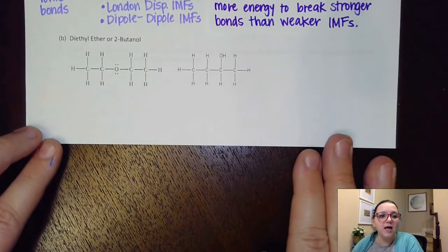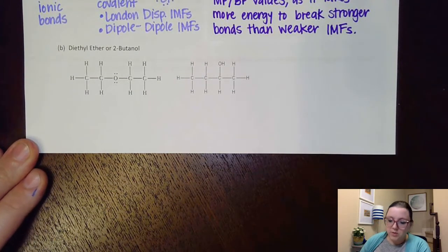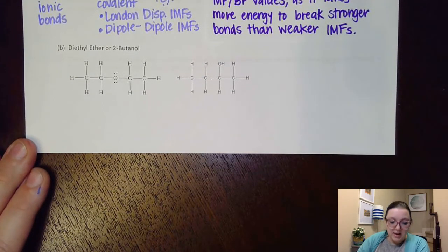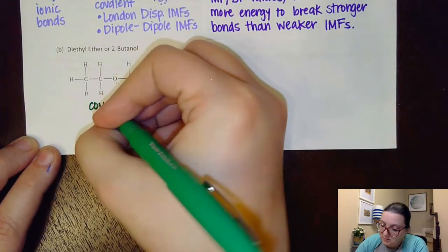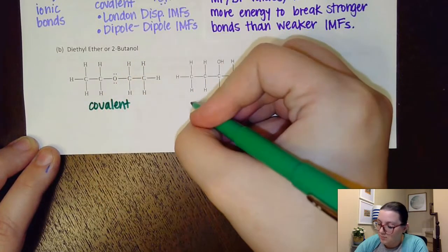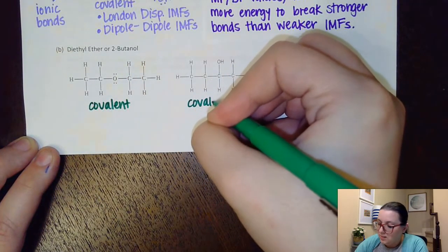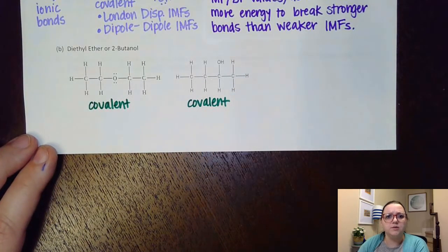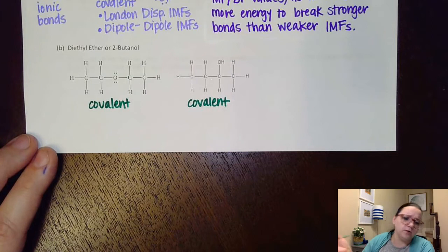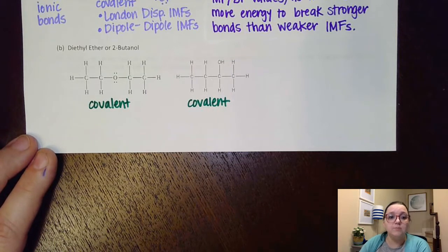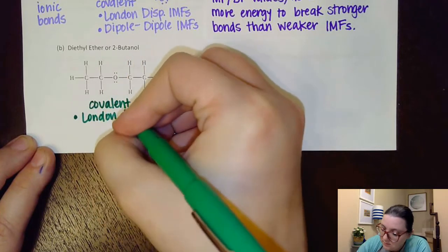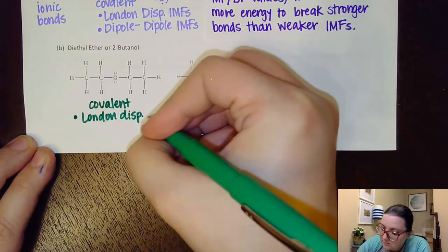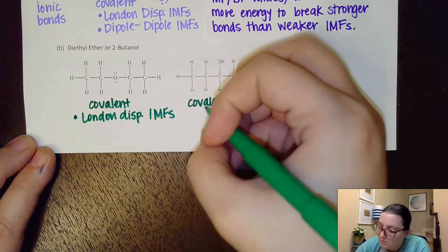Our next duo is diethyl ether and 2-butanol. So I'm going to start off by identifying what kind of substances I have here. Both of these are covalent. They're both non-metal, non-metal combinations, and they're not like diamond or graphite or silicon dioxide, so they're not network covalent. And so that means I can identify some intermolecular forces here. First off, being covalent, they would both have London dispersion forces.